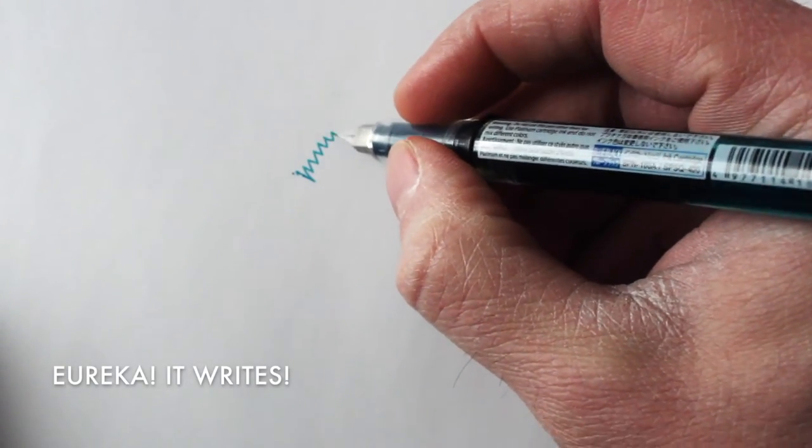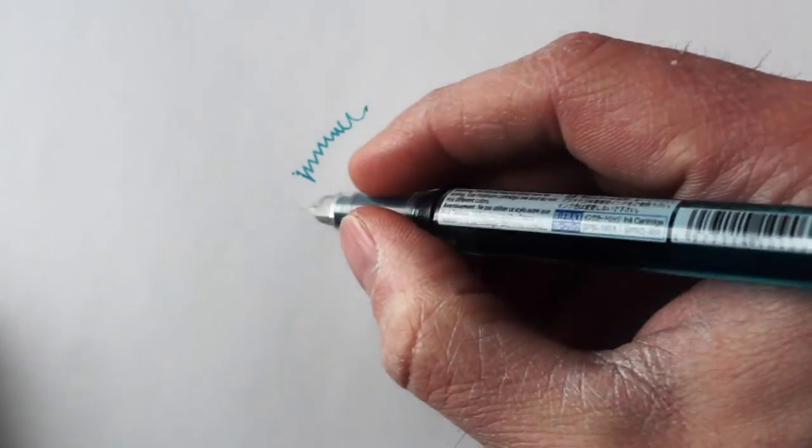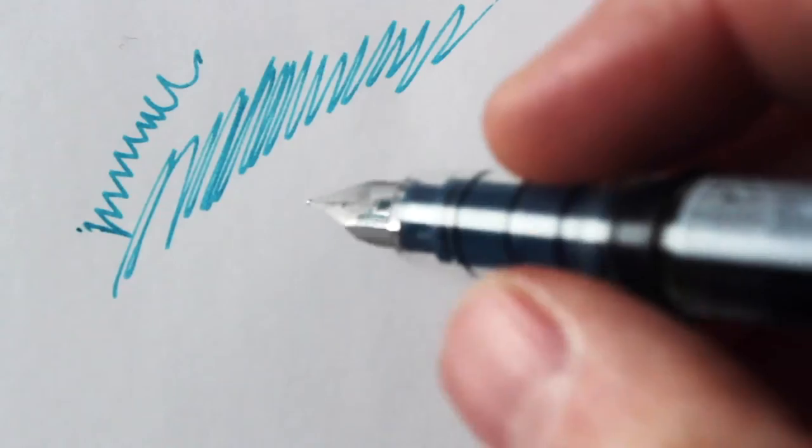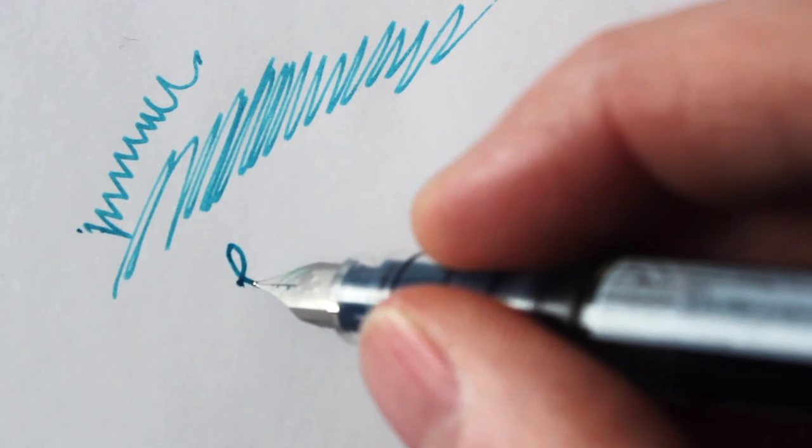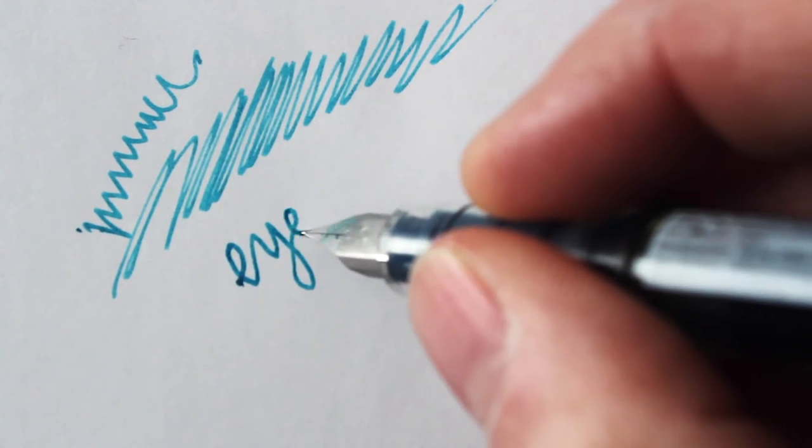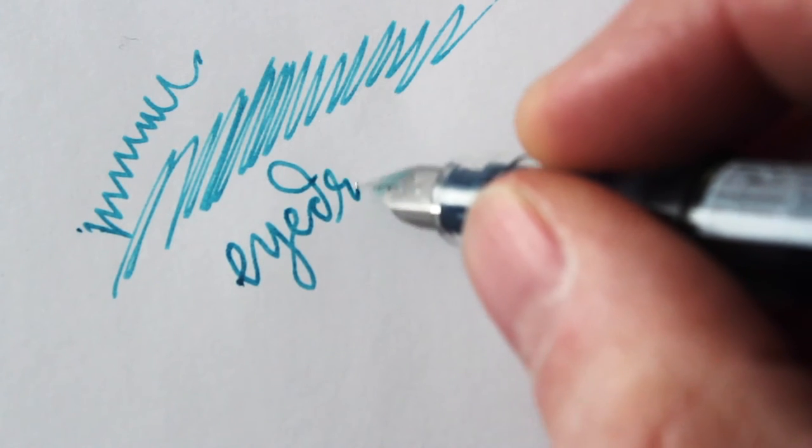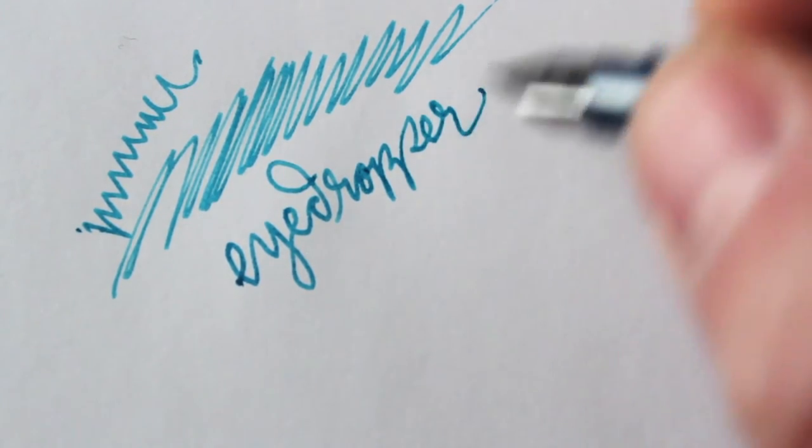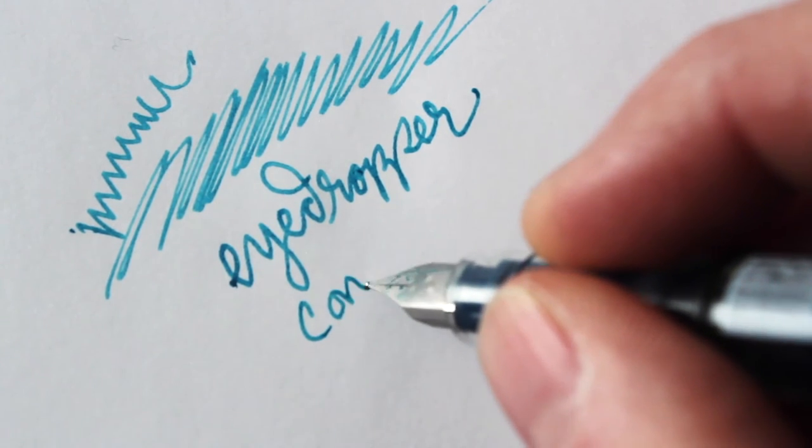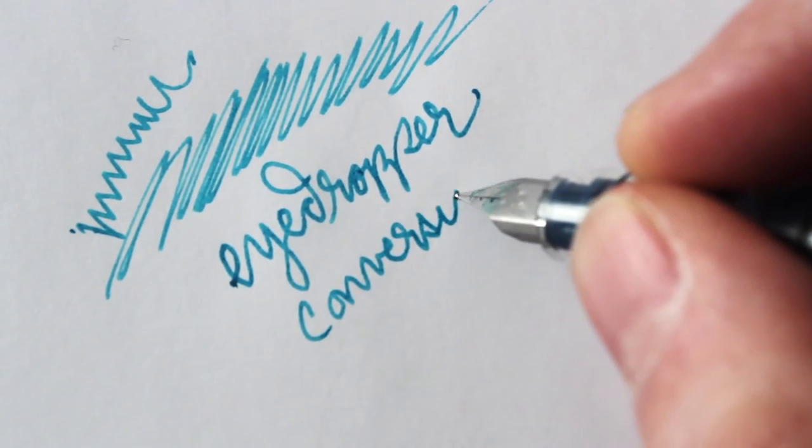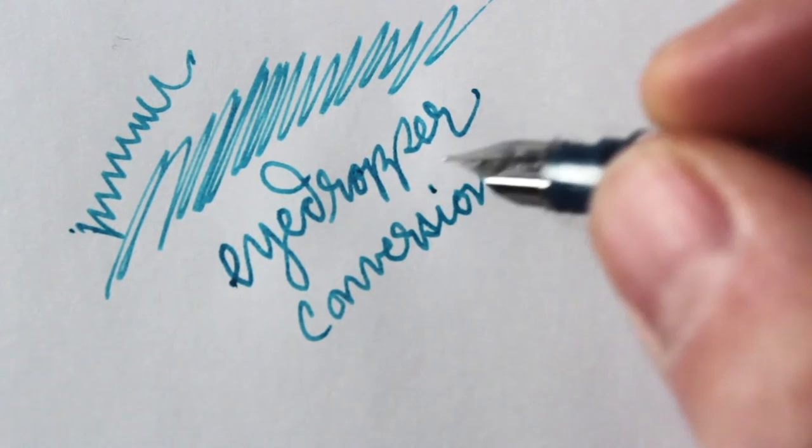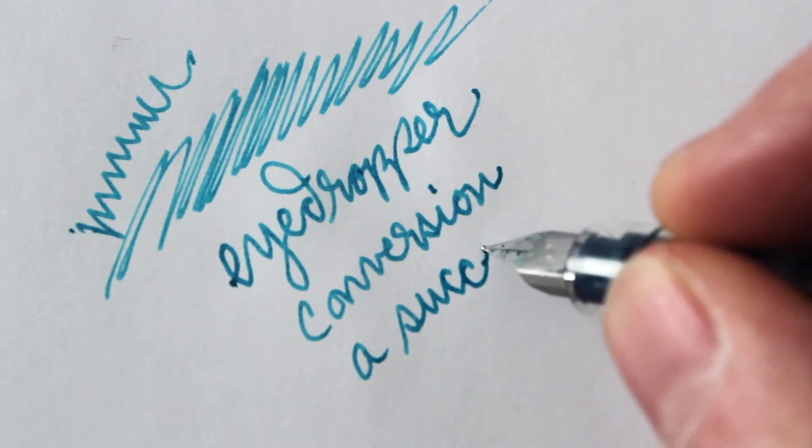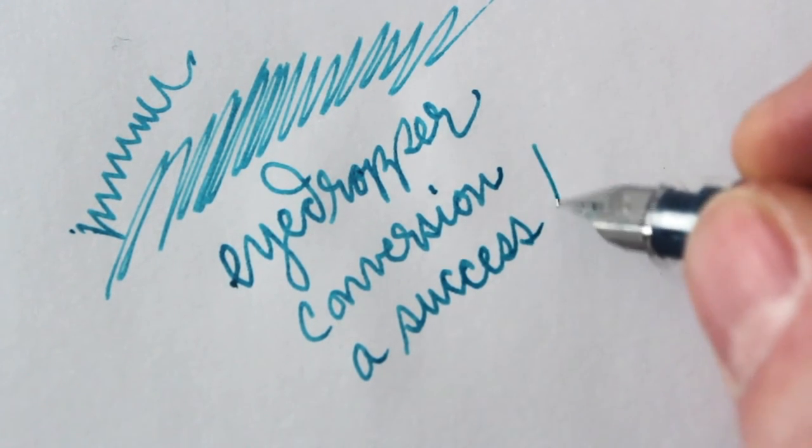Now we're going to test it out and eureka, it writes! So now we're going to see how the rubber meets the road here. There's a certain level of satisfaction that you get from tinkering around with your own fountain pens. This is one of the simple things you can do to a number of fountain pens. Any fountain pen that would have a plastic body and a plastic section. You definitely want to avoid doing this with any fountain pen that would have a metal section or a metal barrel because the ink would eventually corrode the metal.